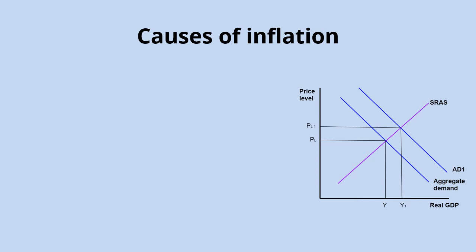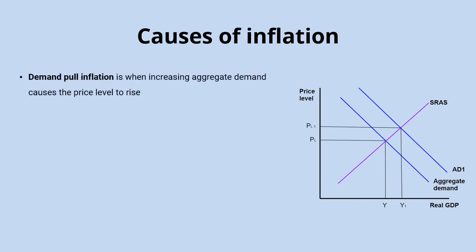There are a huge range of things that can cause inflation in an economy, and most of them can be sorted into whether they're demand-pull or cost-push factors. Demand-pull inflation is when increasing aggregate demand causes the price level to rise. Aggregate demand is made up of its components: consumer expenditure, investment, government spending, and net exports — exports minus imports. So anything causing these components to rise may bring about demand-pull inflation.